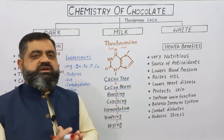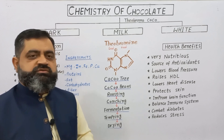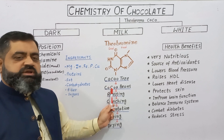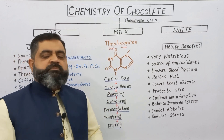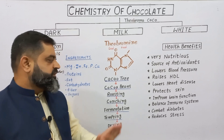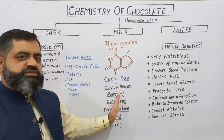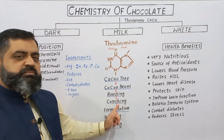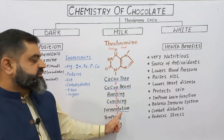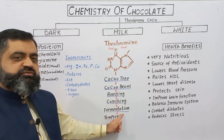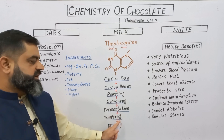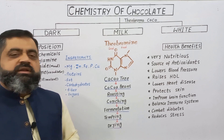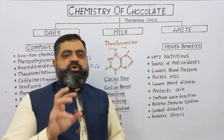There is a fruit produced on this tree which is cut and the seeds are taken out. The cacao tree produces cacao beans, or cocoa beans, which are present inside the fruit. These cocoa beans are then roasted. After roasting they are passed through a process known as conching, then fermented for a few days, and then they are tempered.